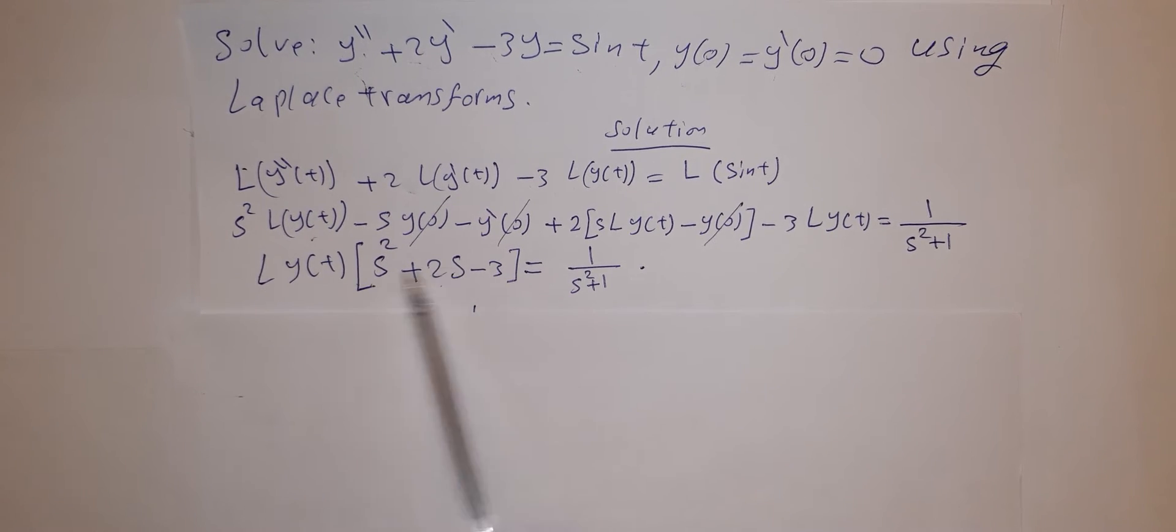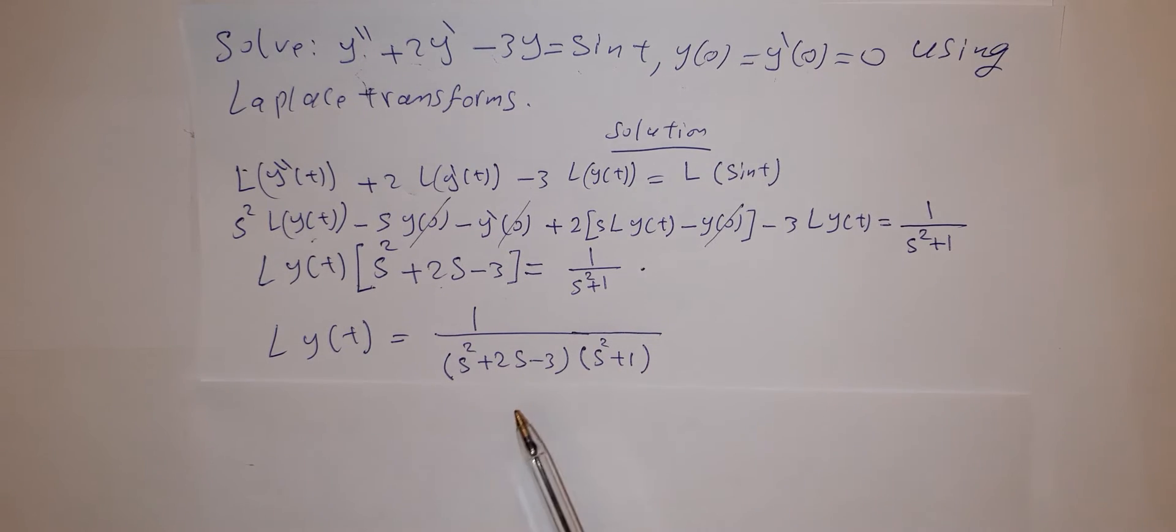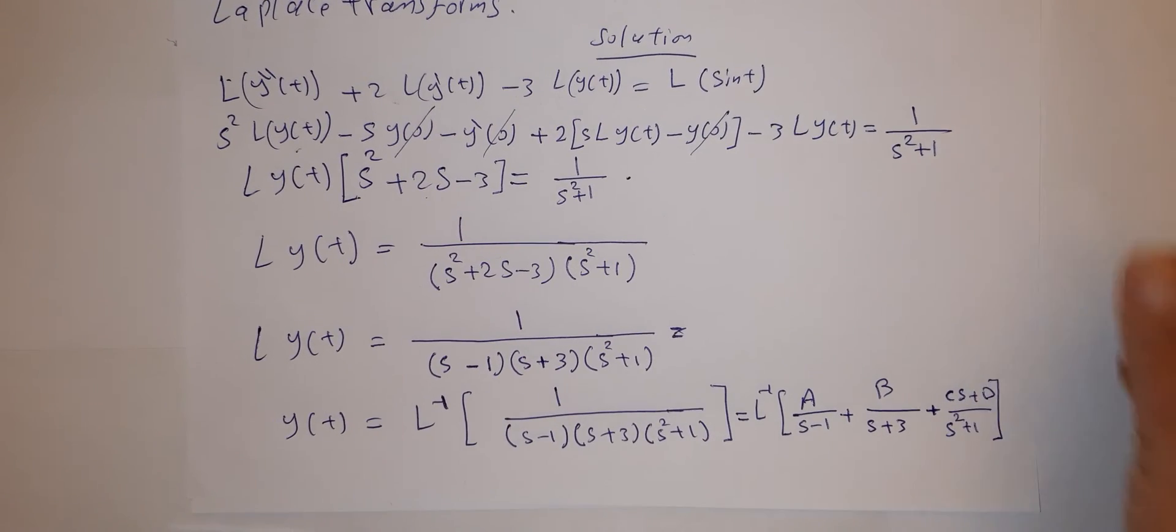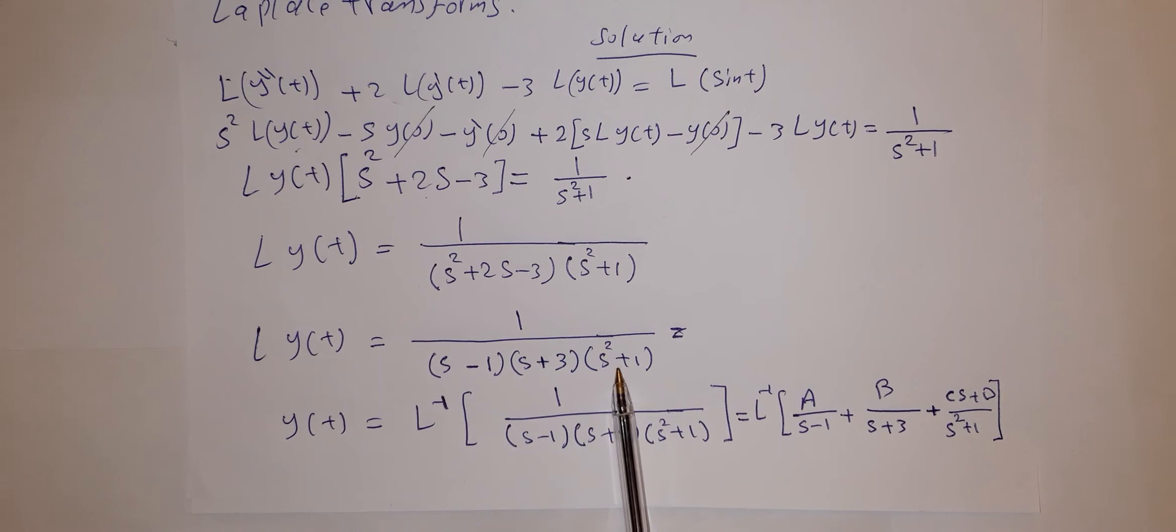Now divide by this expression. So you have Laplace y of t equals 1 over s squared plus 2s minus 3 times s squared plus 1. You can factorize here, so you have 1 over (s minus 1)(s plus 3)(s squared plus 1).